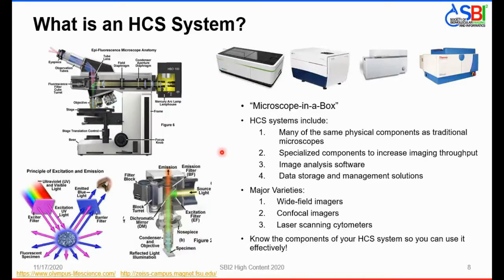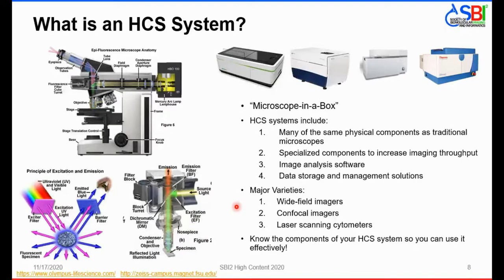What exactly is a high-content screening system? In its simplest terms, it's a microscope in a box. HCS systems include many of the same physical components as traditional microscopes, with specialized components to increase imaging throughput and image analysis software to evaluate images. These instruments also typically come equipped with data storage and data management solutions. There are many varieties of high-content imaging systems, including wide-field imagers, confocal imagers, and laser scanning cytometers. Knowing the components of your HCS system is key to using it effectively.